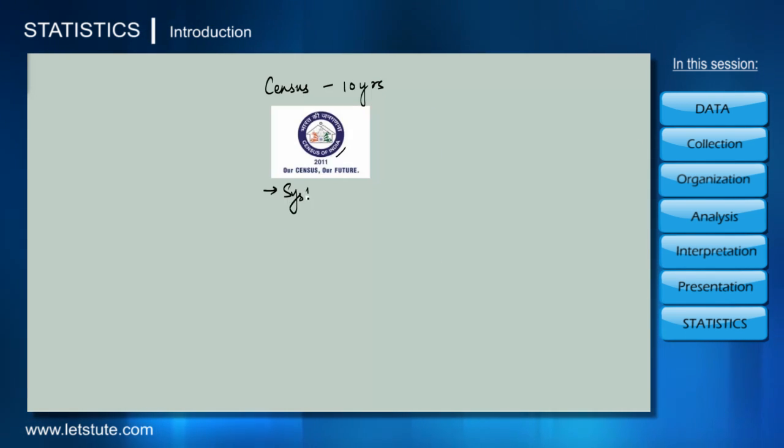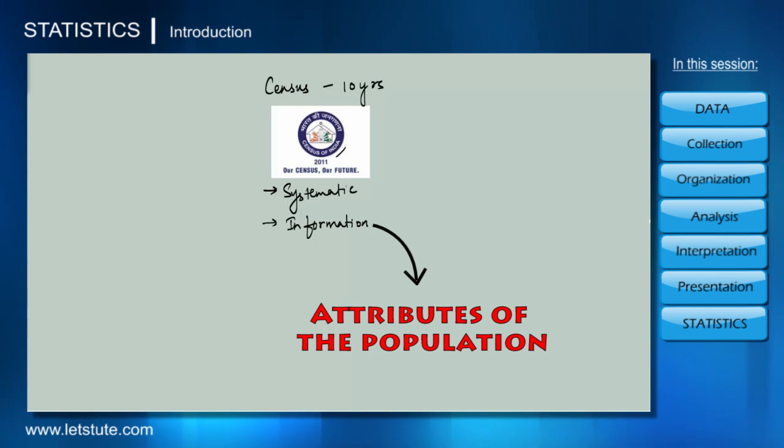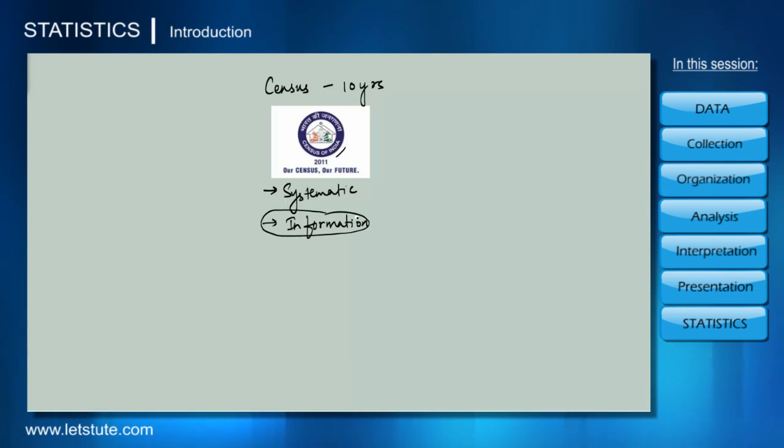A census is a systematic procedure where we try to acquire and record information about the different attributes of the population. This raw or unorganized information that we acquire is called data, and when we talk about census or something to do with data, we usually talk about statistics.